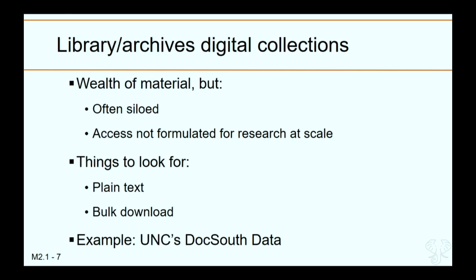Digital collections are another source. We've heard about some of the biggest: the Biodiversity Heritage Library, digitized newspapers from Chronicling America. Those collections and many more in our libraries have a wealth of text data, but this data from libraries is often siloed and not formulated for research at scale. When finding data from digital collections, two key things to look for are: make sure it's in an accessible format, often plain text, and look for digital collection content that allows bulk download. The University of North Carolina's DocSouth data is a great example because they've made it in plain text and accessible for bulk download.